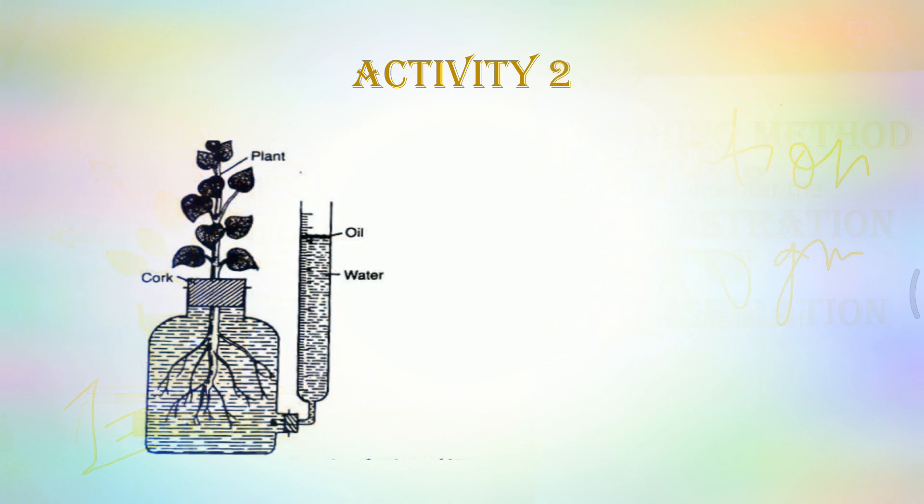Second experimental setup is little different from the first one. Here the entire plant is taken into a beaker and it is fitted in such a way so that the roots are there inside the water. Along with the roots there is a graduated tube which is combined with it and at the top of the tube we have put few droplets of oil over the water. So that we can avoid any kind of evaporation which may take place if water was present.